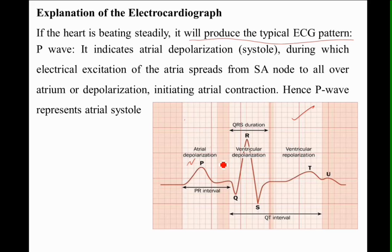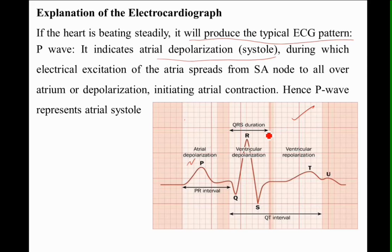Here we observe P, T, and QRS components. The P wave indicates atrial depolarization — what we call systole — during which electrical excitation of the atria spreads from the SA node to all over the atrium, initiating atrial contractions. When the atria contract, depolarization of the atria is observed. Hence, the P wave represents the atrial systole.